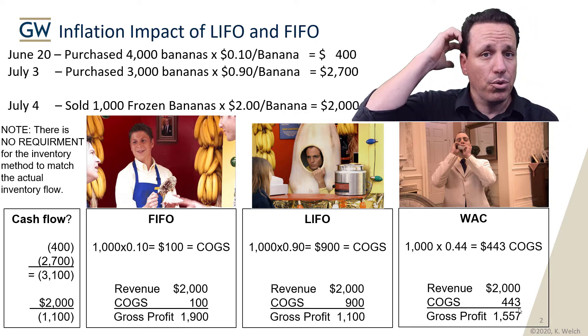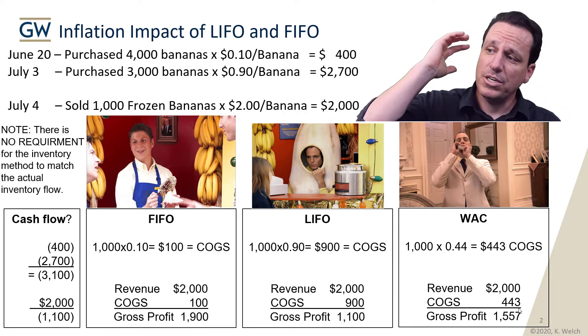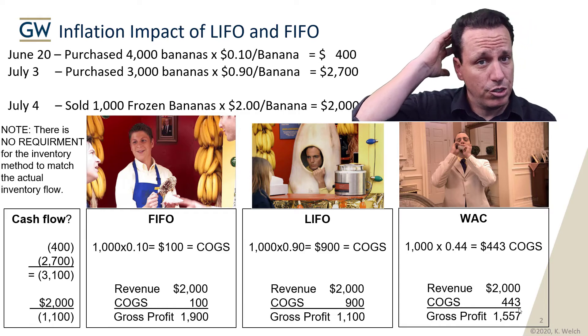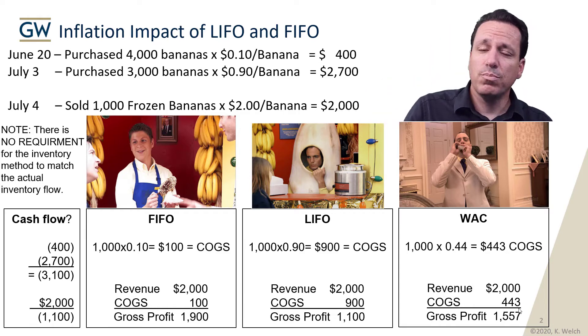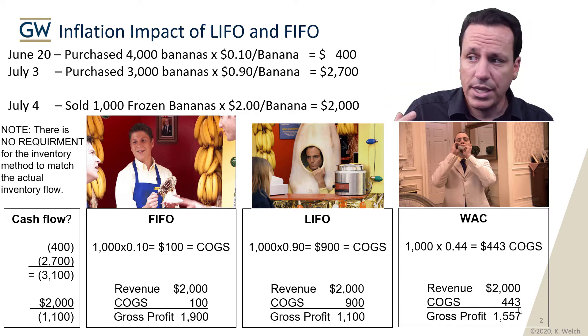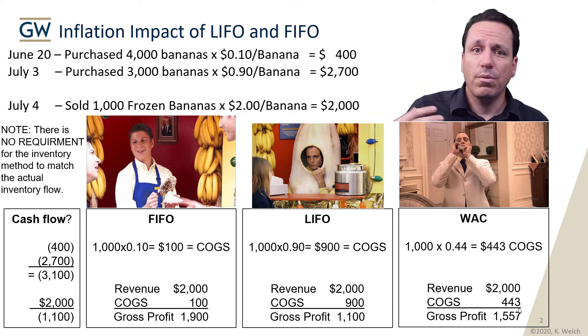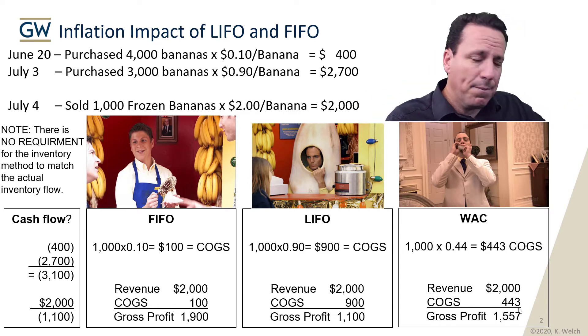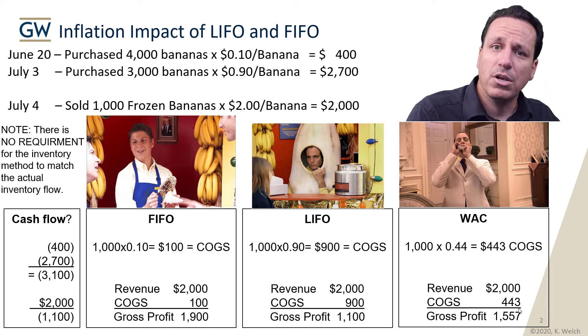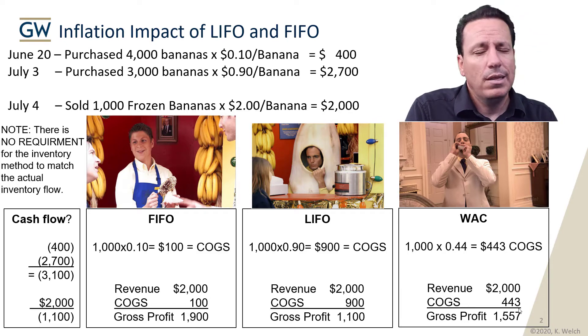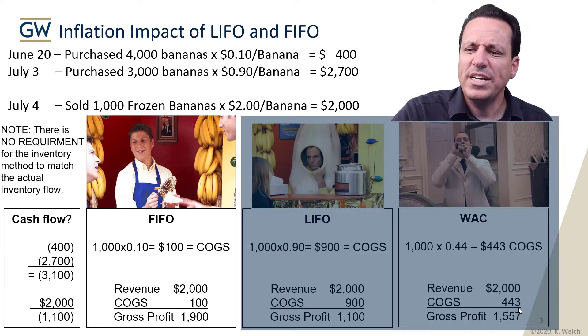Buster Bluth, especially when he's drinking juice, is a little crazy. He'll grab from the top, the bottom, the middle — he's all over the place. So Buster represents the weighted average cost method.